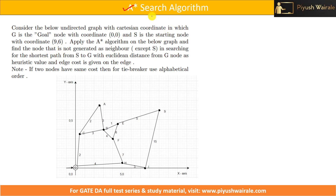A* search is basically an informed search technique. Informed search is based on heuristic value. Based on heuristic value, we take the next node or find out the path which has the minimum heuristic value.